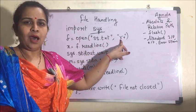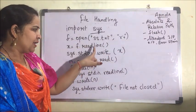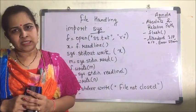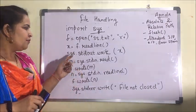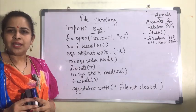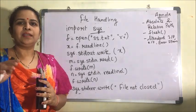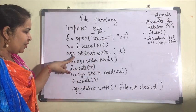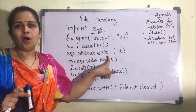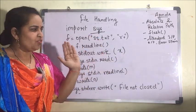I read one line from the file using readline, and then I want to print it on the screen. Usually we use the print command, but here we use sys.stdout.write. Initially, the write function was used to write to a file. But when used with standard output, it writes to the standard output device — that is, the monitor. Whatever value is in x will be displayed on the monitor.